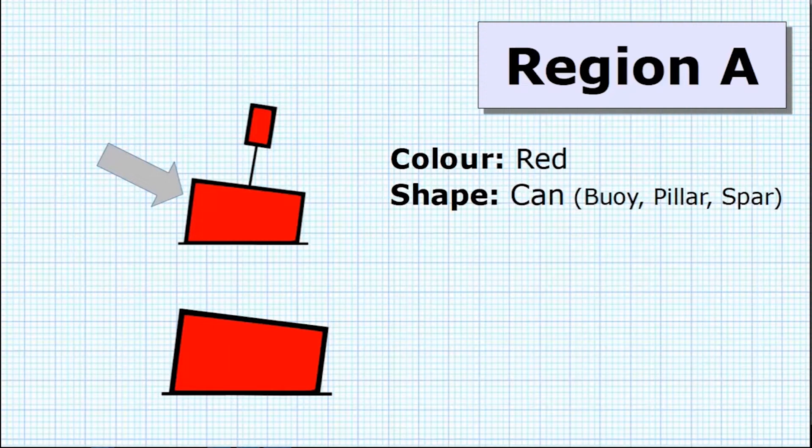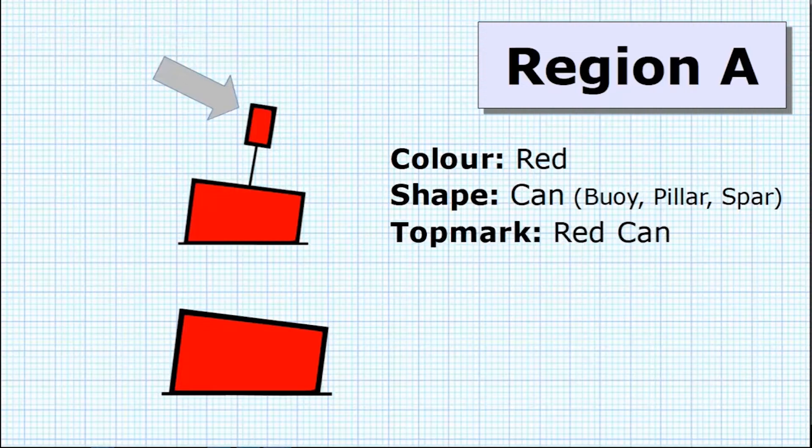Now, this could be on a buoy, a pillar or a spar. We'll cover these different things later in the video. Next off, we look at the top mark, which in this case is going to be a red can. It's not always fitted. You can see the buoy at the bottom hasn't got a top mark fitted. But if it is, it's going to be a red can.